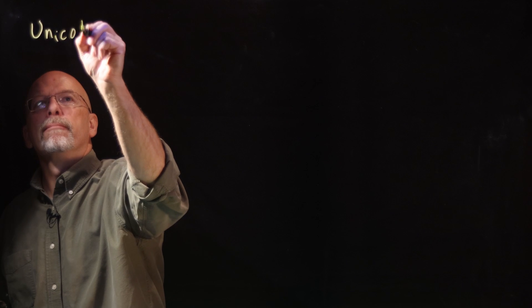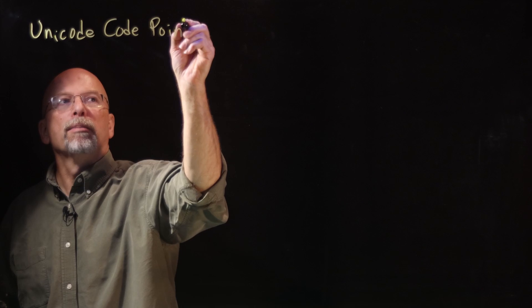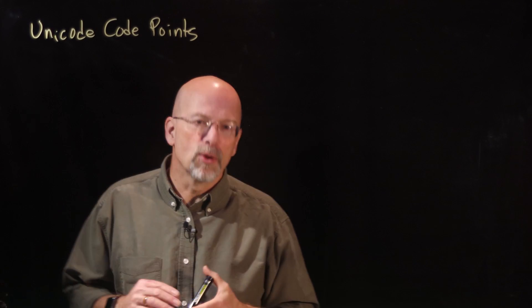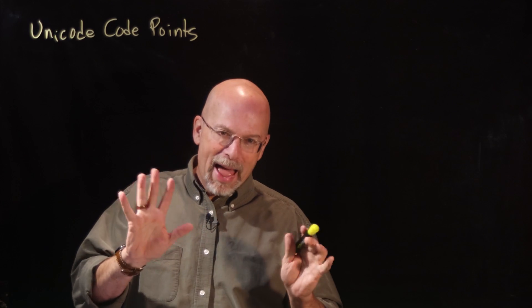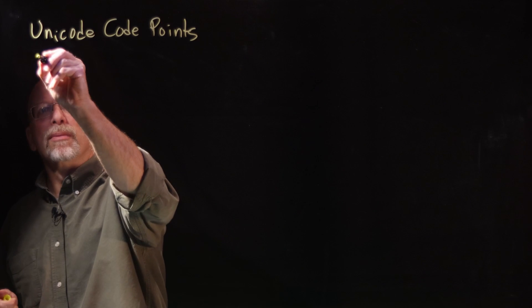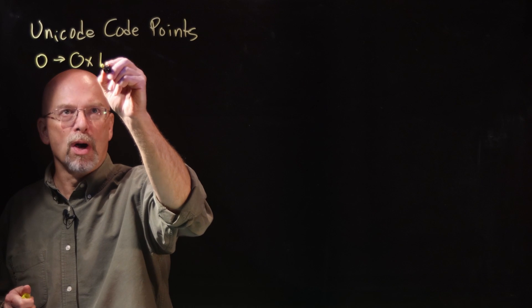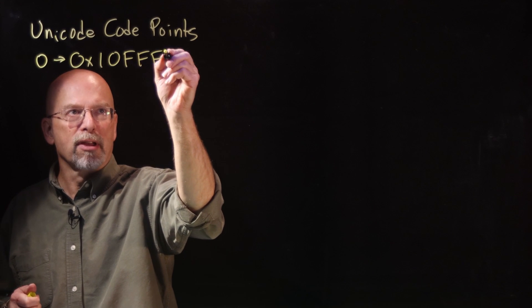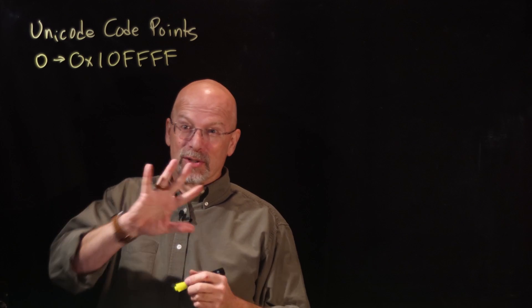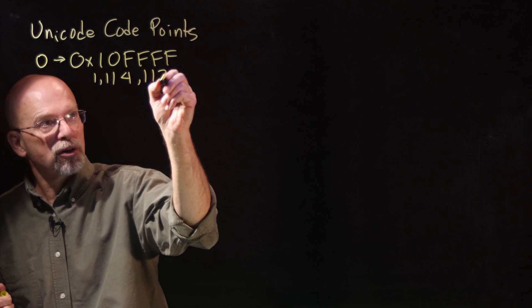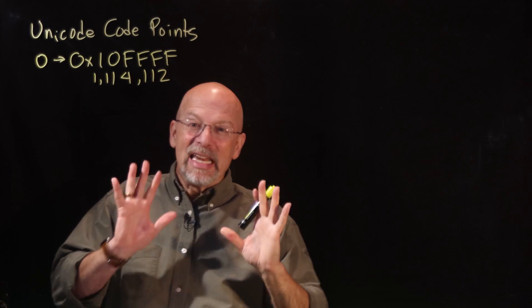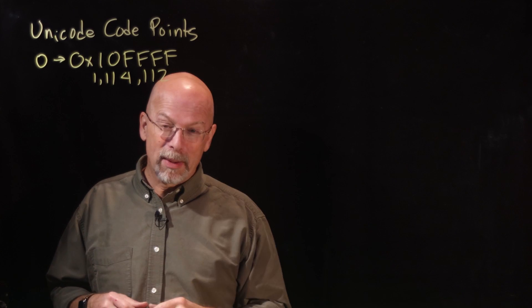In the end, what happened was a thing called Unicode code points. Unicode itself is not considered an encoding — it's simply an assignment, a mapping of a character to a binary pattern of ones and zeros. As of this recording, the patterns go from zero all the way up to hexadecimal 10FFFF, which is over a million — specifically 1,114,112 different points to assign to characters.